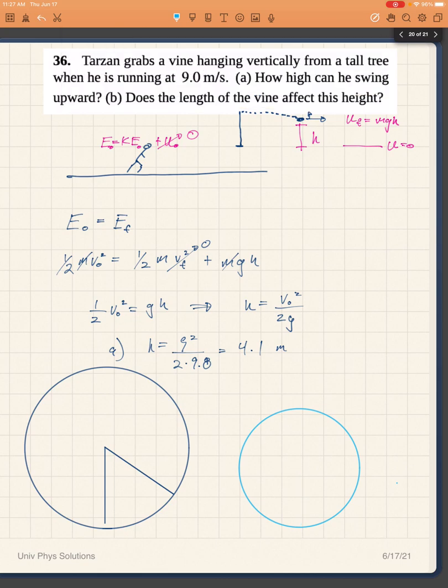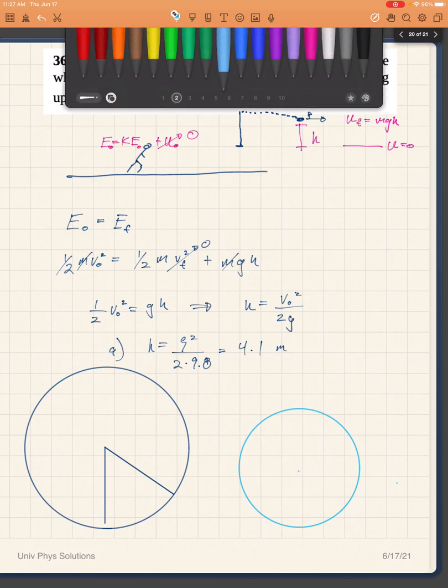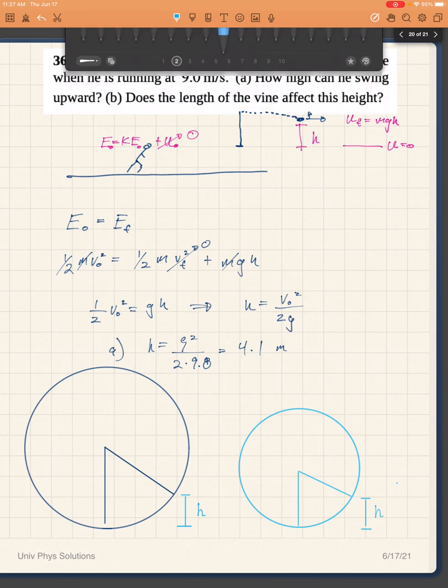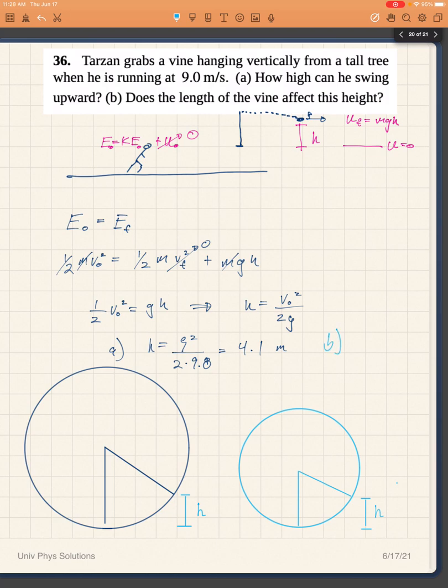He would end up swinging from that same initial height to the same final height. Because all of the energy that he has at the beginning, which is kinetic, gets transformed into potential energy. And so really it is only h that will determine at what point all that kinetic energy has transformed into potential energy. So no, the length of the vine does not affect his height.